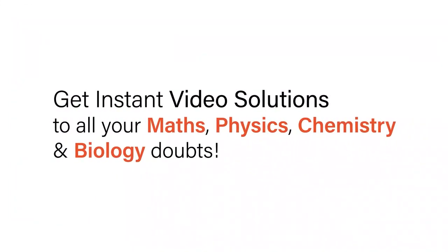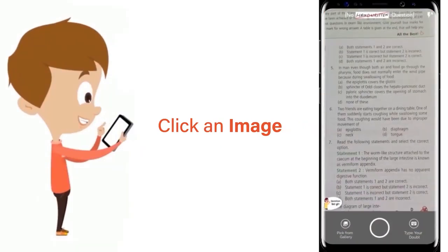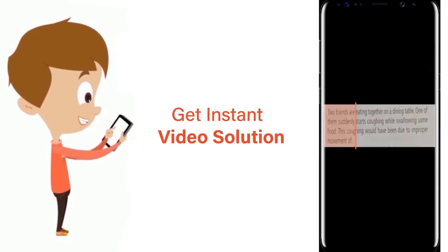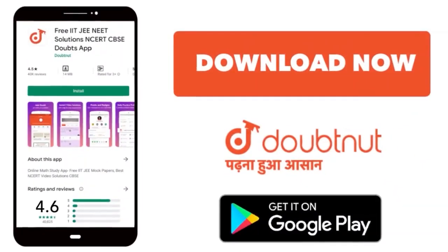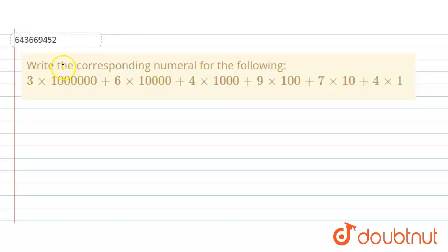With Doubtnet, get instant video solutions to all your maths, physics, chemistry and biology doubts. Just click the image of the question, crop the question, and get instant video solution. Download Doubtnet app today. Hello everyone, the question says write the corresponding number for the following.